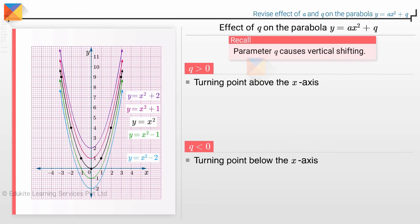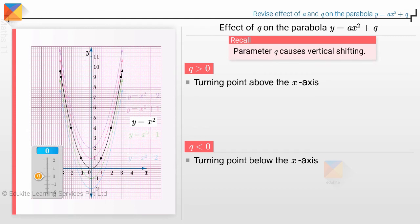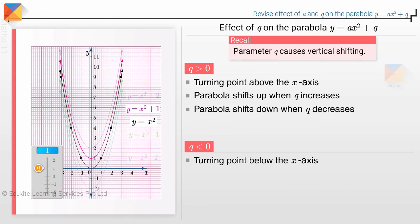Recall that parameter Q causes vertical shifting. Let us vary the value of Q and see how the graph shifts. When Q increases from 0 to 1, that is to say by 1 unit, the graph shifts upwards by 1 unit. When Q is decreased from 1 to 0, the graph shifts downwards, again by 1 unit.